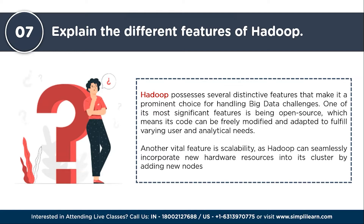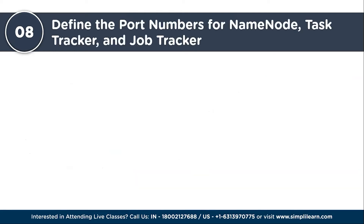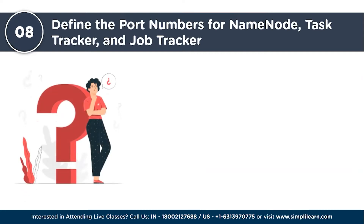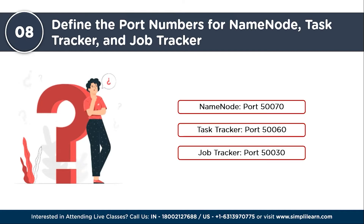The next question: define the port numbers for name node, task tracker, and job tracker. The port numbers for essential components in a Hadoop cluster are as follows: the port number for name node is 50070, for the task tracker it is 50060, and for the job tracker it is 50030.